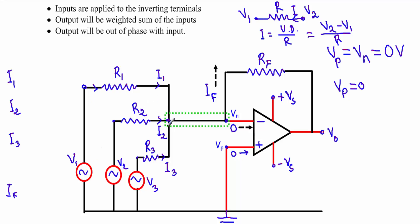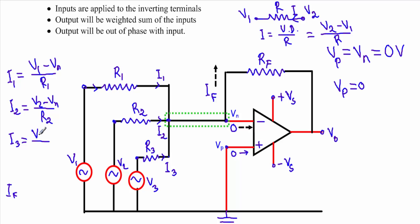I1 is flowing with voltage V1 at one terminal and Vn at the other, so I1 equals V1 minus Vn divided by R1. I2 equals V2 minus Vn divided by R2, and I3 equals V3 minus Vn divided by R3. For IF, the current is flowing such that Vn is higher with respect to V0, so IF equals Vn minus V0 divided by Rf.